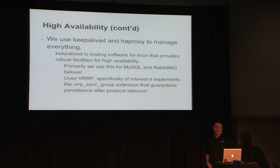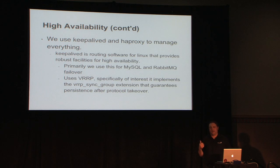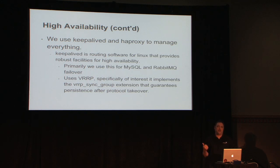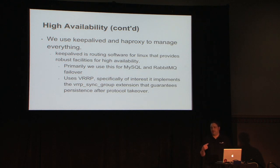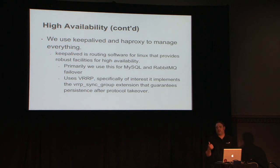We don't use Corosync, Pacemaker, or DRBD. We found a great tool called KeepaliveD that uses VRRP — the Virtual Router Redundancy Protocol. The use of VRRP allows for very quick failovers. It also has a load balancing service, but that couldn't run in one-arm mode without setting the gateway of all compute nodes to go through the KeepaliveD server, which would create a throughput bottleneck. So we use HAProxy for our API services, and primarily use KeepaliveD for MySQL and RabbitMQ.